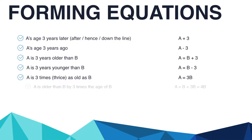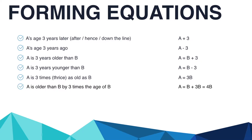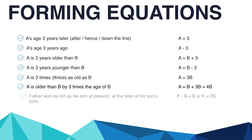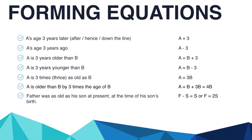A is 3 times older than B means A equals B plus 3 times B, which equals 4 times B. For 'father was as old as his son at present at the time of his birth': using F for father and S for son, F minus S equals S, or F equals 2S.